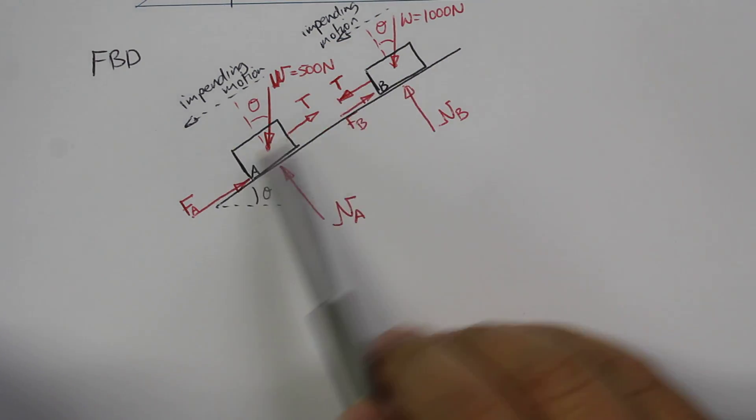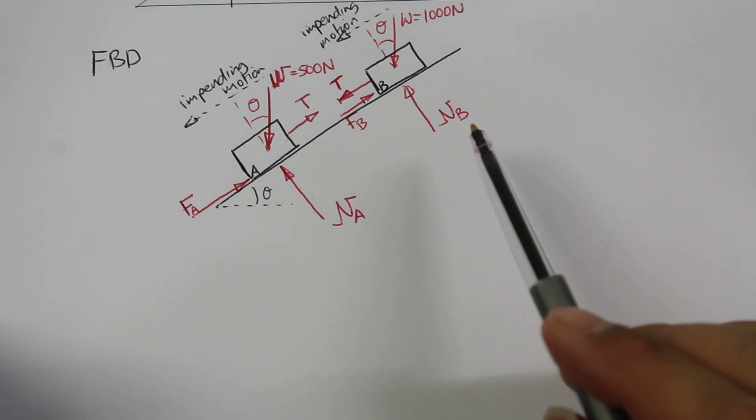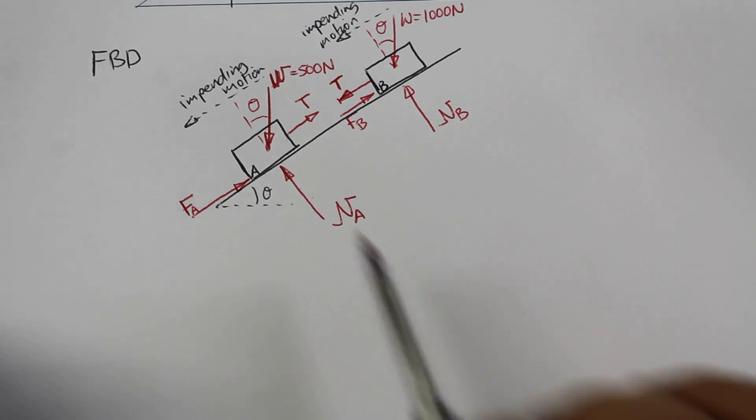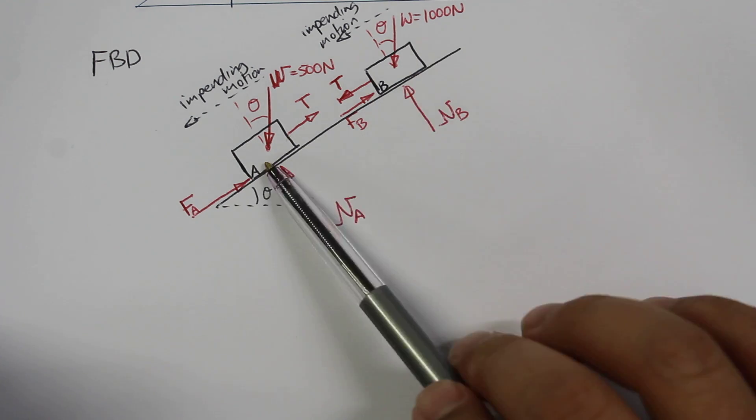From these two free body diagrams, we will be able to have a look at the summation of forces in the x direction, the summation of forces in the y direction, and the friction coefficient for each of the two situations.